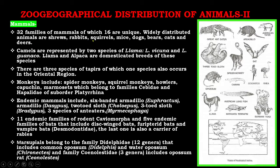In the Neotropical region, mammals are represented by 32 families, of which 16 are unique. Widely distributed animals include shrews, rabbits, squirrels, mice, dogs, bears, cats, and deer. Camels are represented by two species of llamas: llama vicuña and llama guanaco; llama and alpaca are domesticated breeds of these species. There are three species of tapirs, one of which also occurs in the Oriental region. Monkeys include spider monkeys, squirrel monkeys, howlers, capuchins, and marmosets, belonging to families Cebidae and Callitrichidae of suborder Platyrrhini.